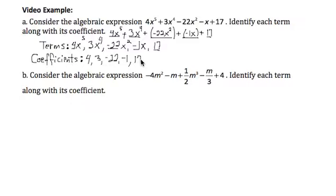in front of the variable part, and they do include the negatives. The terms are the actual entire building block, including the variable and a negative sign if it exists. So let's take this information and apply it to part B.